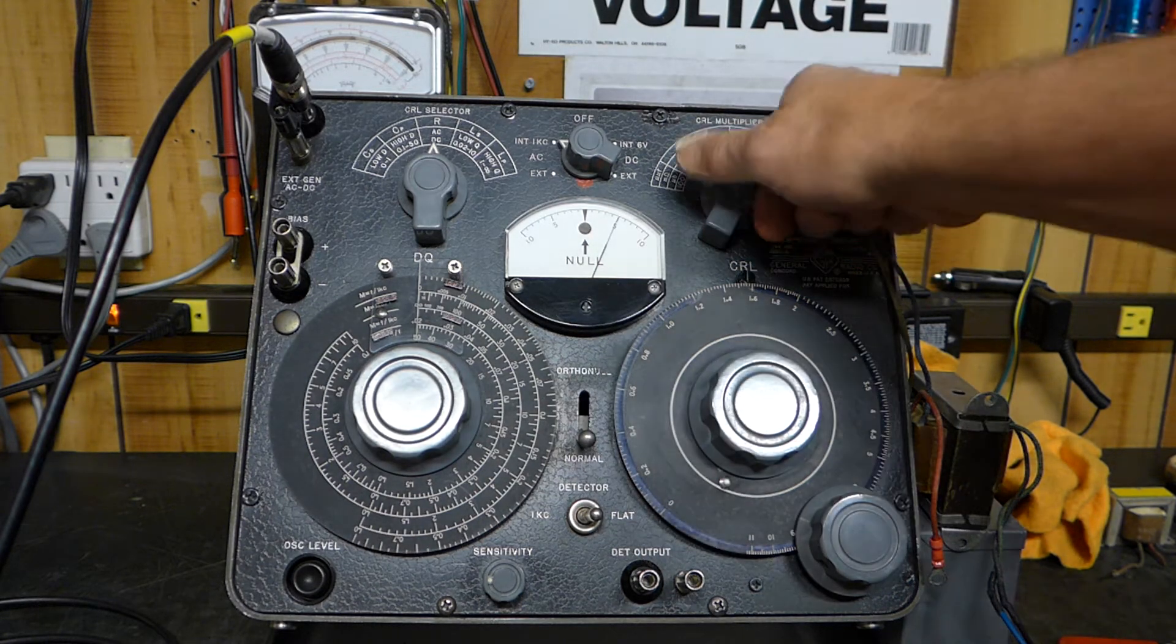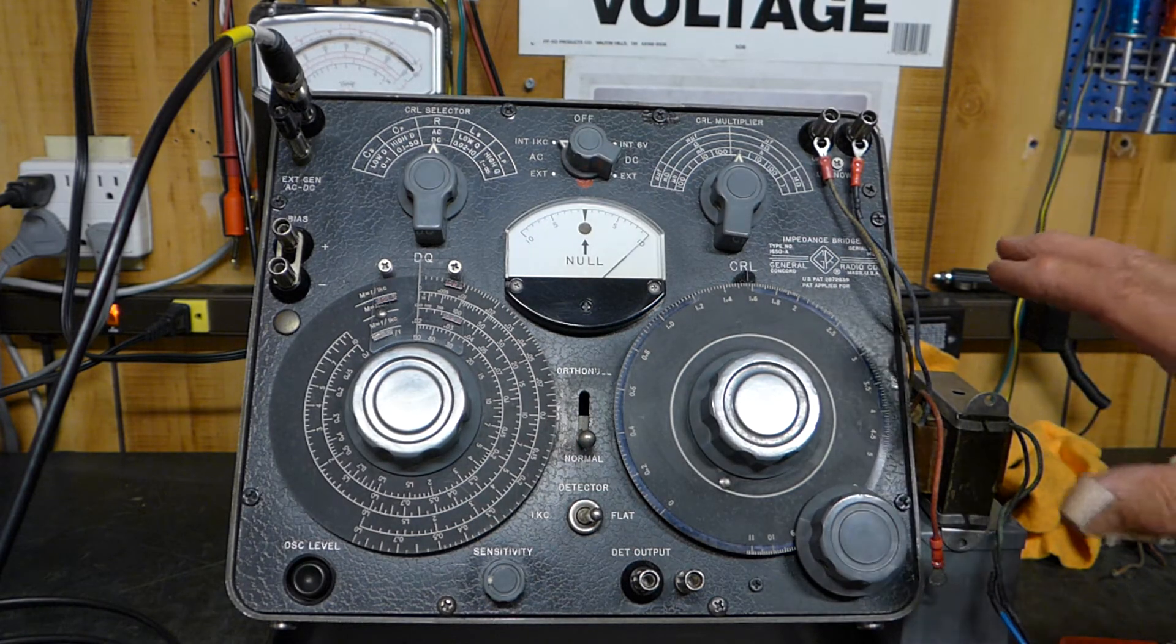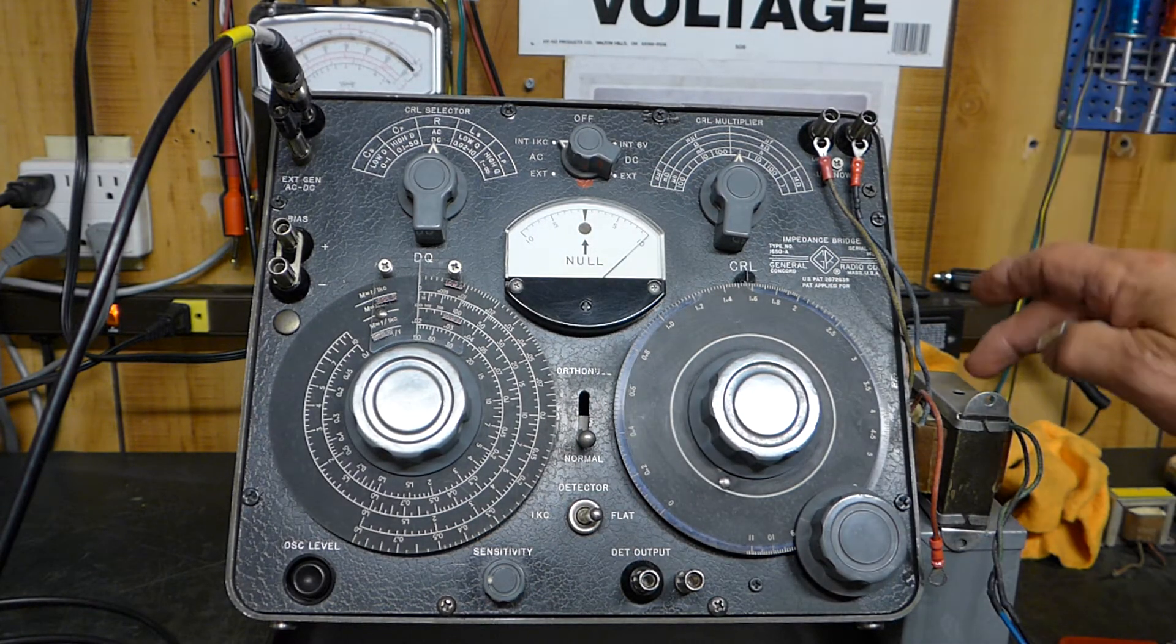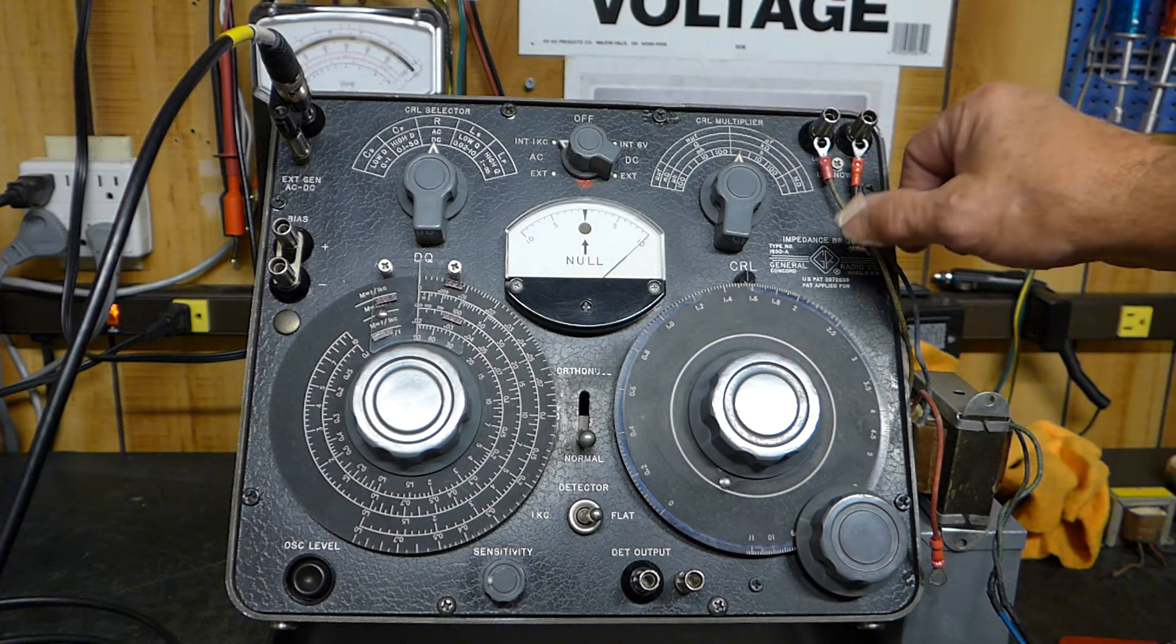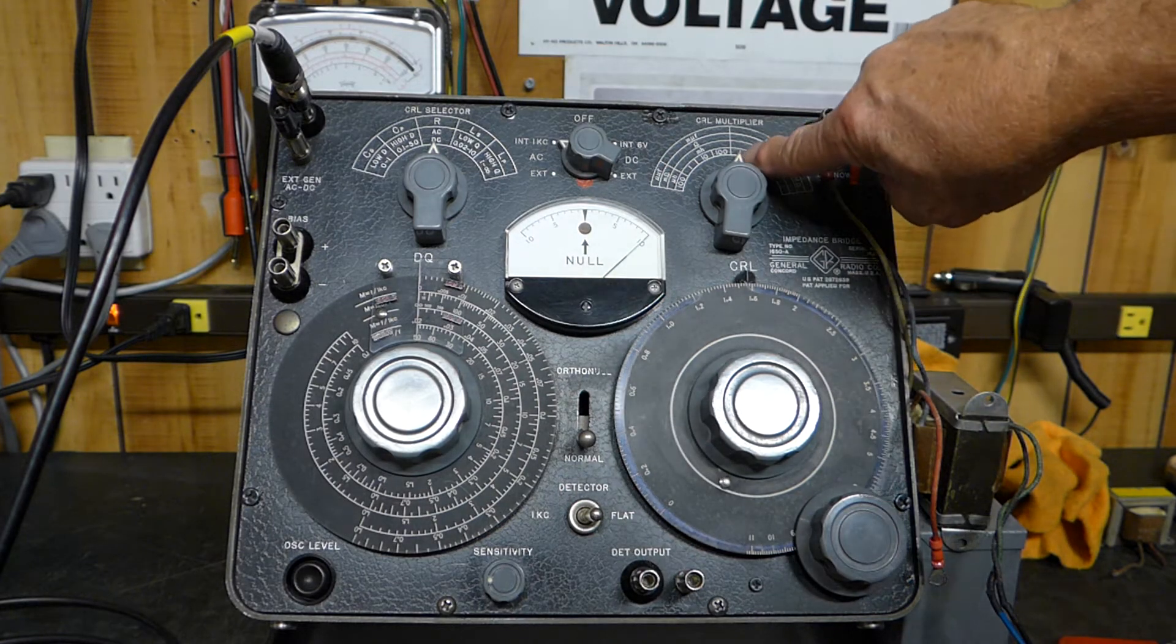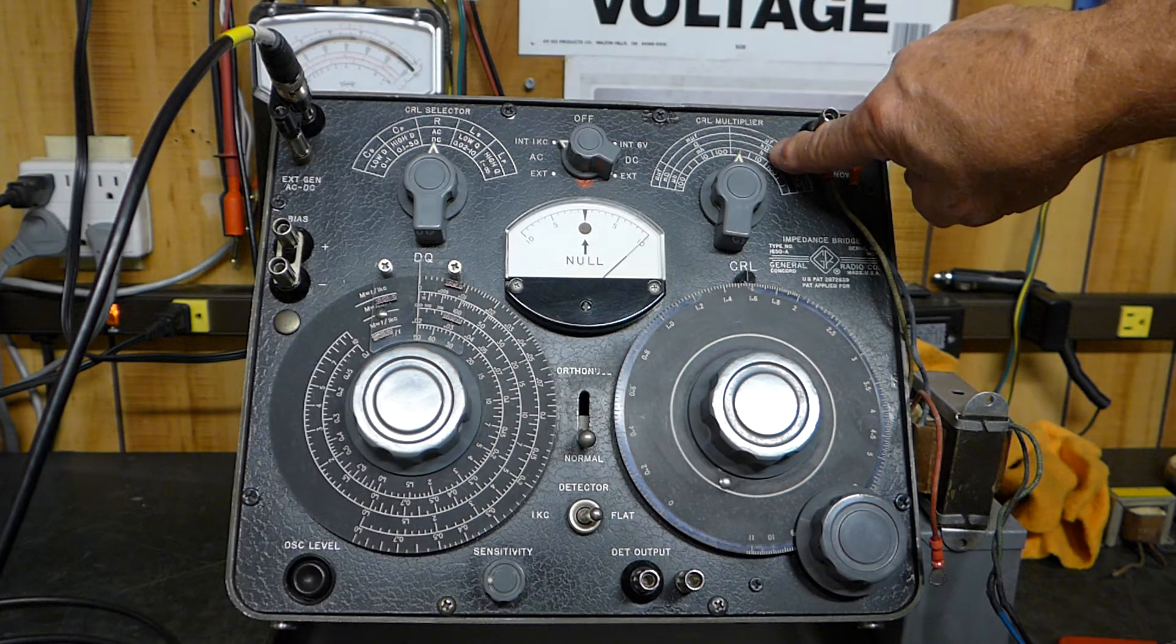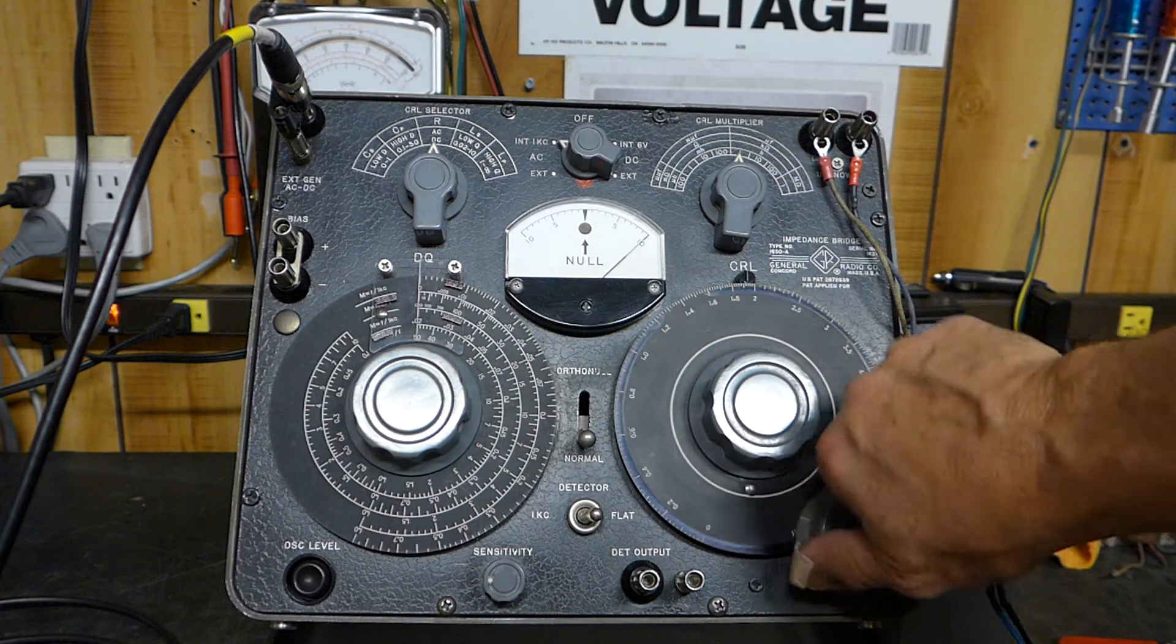I'm going to switch it back to one. Okay, what we determined last night is that the voltage ratio and the impedance ratio of this would end up giving us a primary impedance of about 8 kilohms. And since I have it on one times K, one kilo times the reading here...